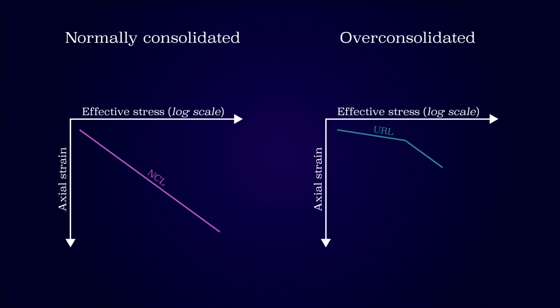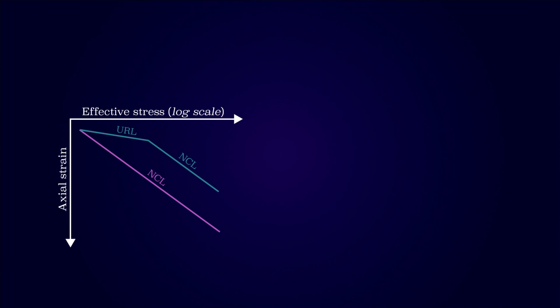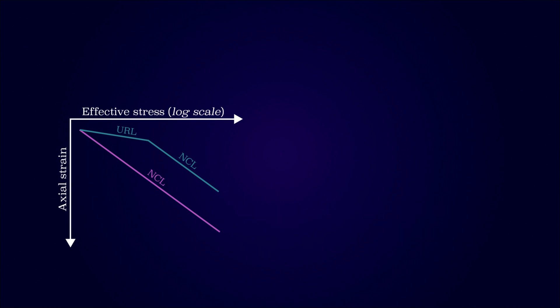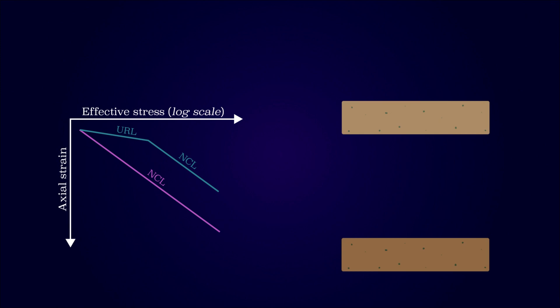At some point the curve breaks and the soil behaves normally consolidated again. The effective stress at the breakpoint is the pre-consolidation stress — this is the maximum stress previously experienced and marks the transition from overconsolidated to normally consolidated. This can then be compared to the current effective stress in the field to determine the overconsolidation ratio. If the two stress-strain curves are compared, it is evident that the overconsolidated soil experiences smaller strains at the same effective stress level. The stiffer response of the overconsolidated soil is utilized when considering settlements.